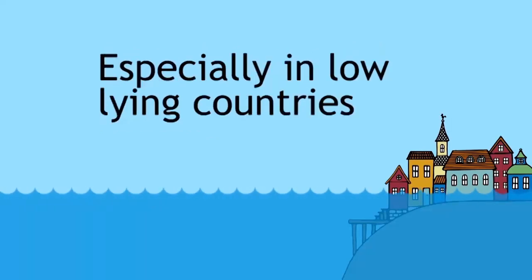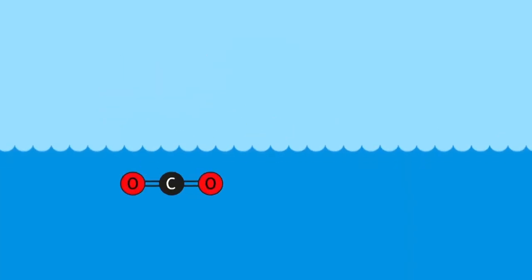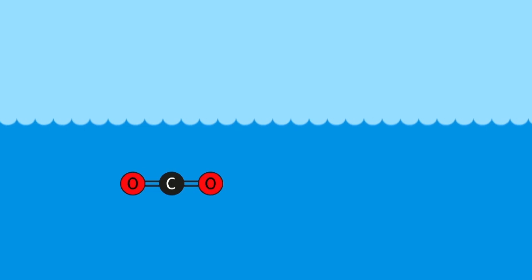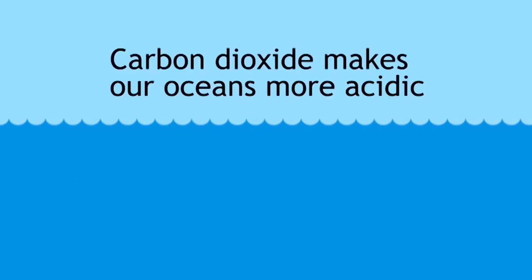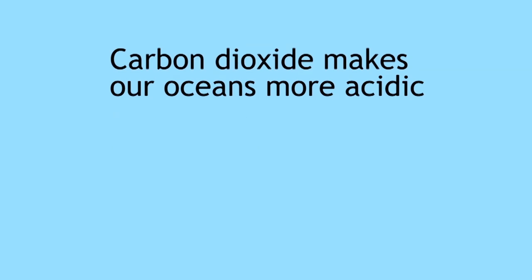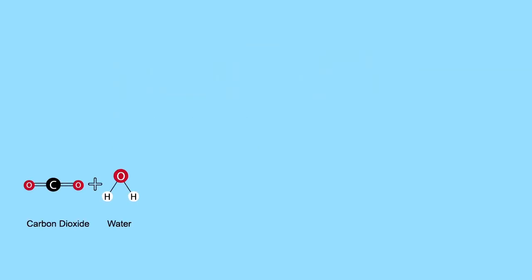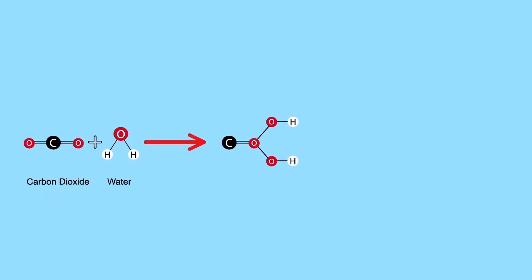Another problem comes from the extra carbon dioxide that dissolves in the sea. A good thing you may think because this removes some of it from the atmosphere. But the problem is that this makes the seas more acidic. Remember that carbon dioxide reacts with water to form a very weak acid, carbonic acid.